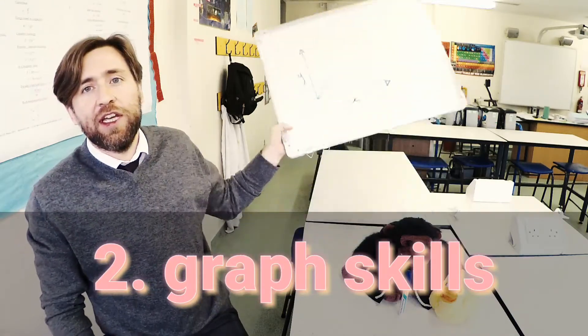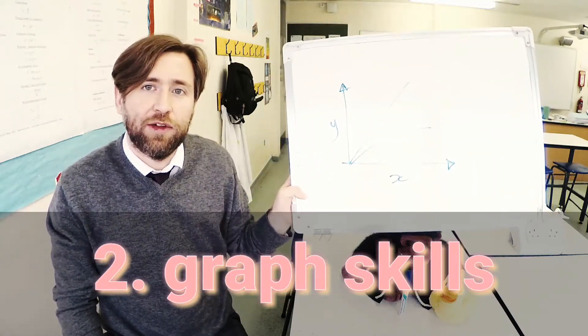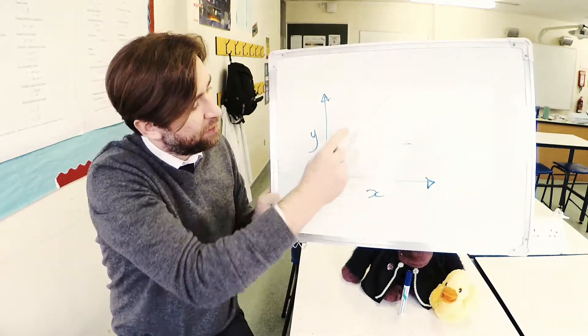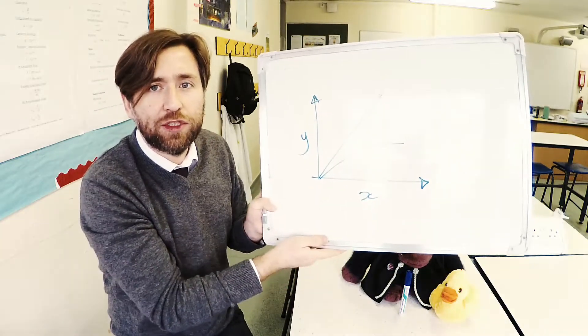Number two is using and interpreting graphs. And in GCSE Physics, you need to understand some basic things about graphs. This, for example, the straight line through the origin we described as a proportional shape.